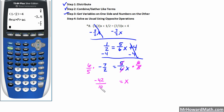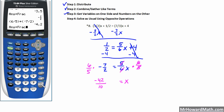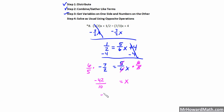Now we have 6 fifths times negative 7 over 2. Let's use the calculator: parentheses, 6 over 5 times negative 7 over 2. That gives a decimal; Math, Enter, Enter gives us a reduced fraction of negative 21 over 5. So our final answer is x equals negative 21 over 5. No problem — we used our calculator to do the heavy lifting of fractions and focused on our algebraic process.